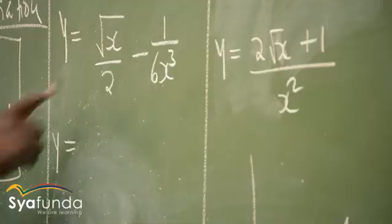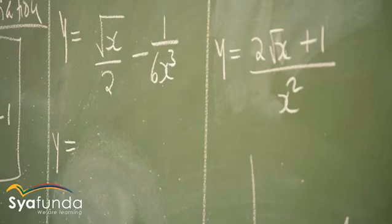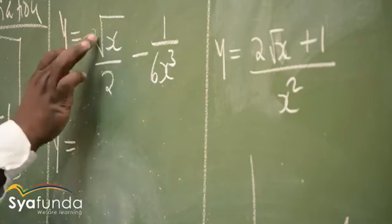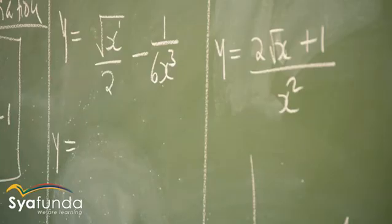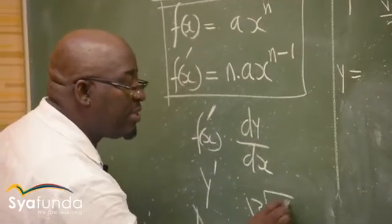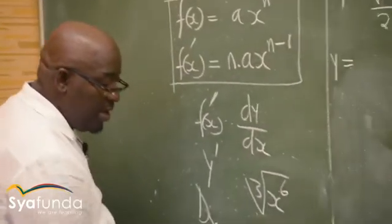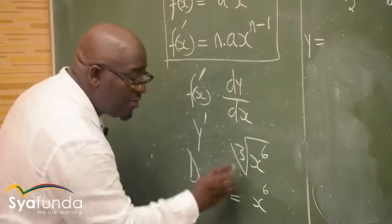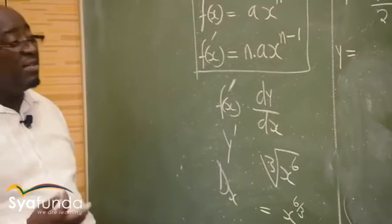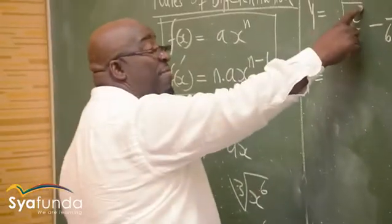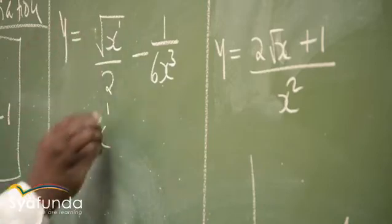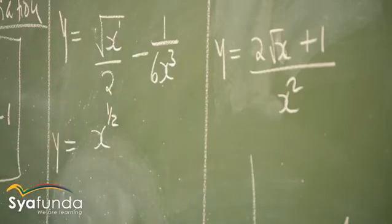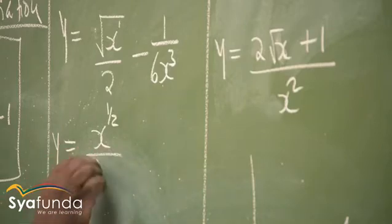How do we write √x in exponential form? Remember, the numerator exponent is 1 and the root is 2, so √x = x^(1/2). For a cube root of x⁶, you write x^(6/3) = x². The same principle applies: √x = x^(1/2).